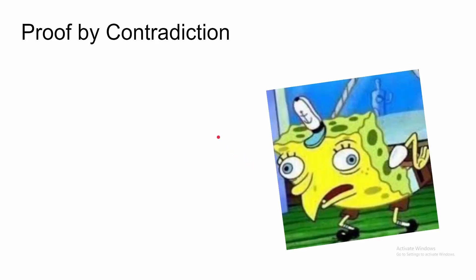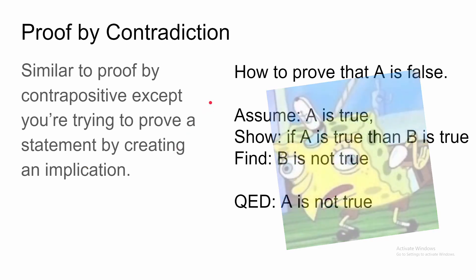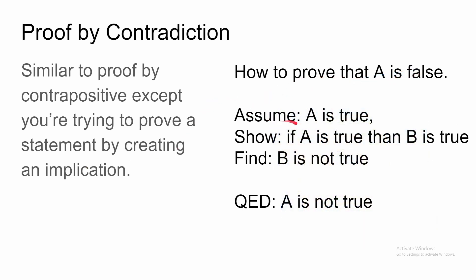Now let's go over proof by contradiction. Proof by contradiction is similar to proof by contrapositive, except you're trying to prove a statement is false by creating an implication that leads to something false. How do you prove that A is false? You assume that A is true, and then you show that if A is true, then B would be true, and then you find that B is not true, so therefore A is not true. This is a very, very powerful proof — because if you assume A is true and find that B must be true, but B is not true, then A must not be true.